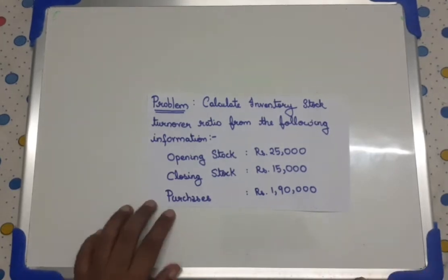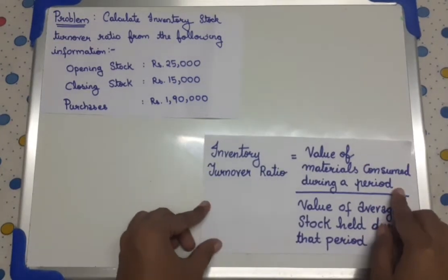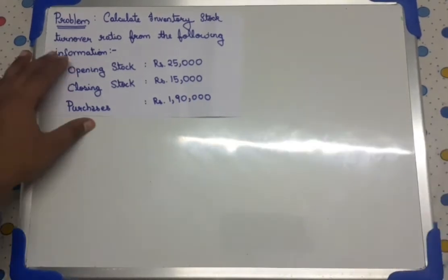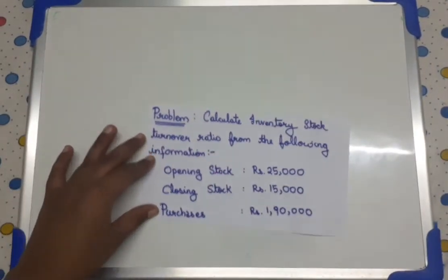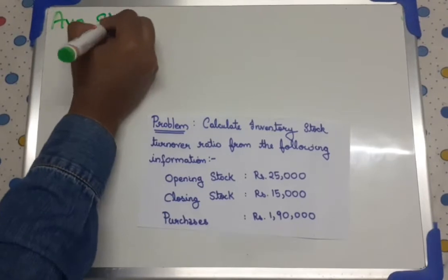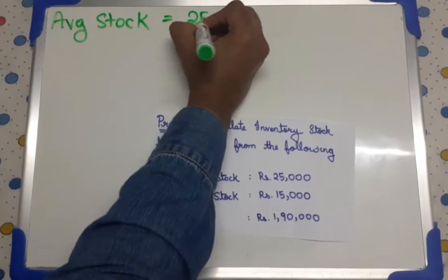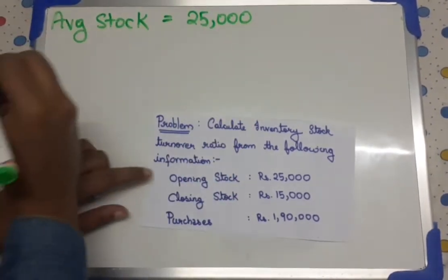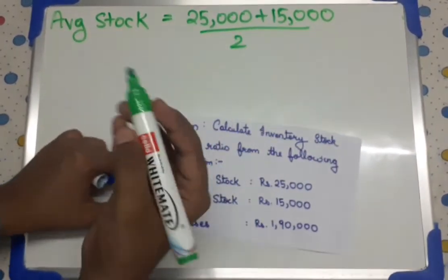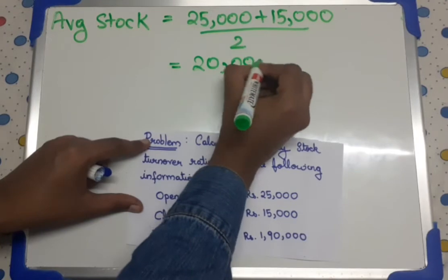Now we know the formula for inventory turnover ratio: value of materials consumed during a period divided by the value of average stock. They have given us the value of opening stock and closing stock, so we can calculate the average stock. Average stock equals opening stock plus closing stock divided by 2, which is 25,000 plus 15,000 divided by 2, equal to 40,000 divided by 2, which equals 20,000.